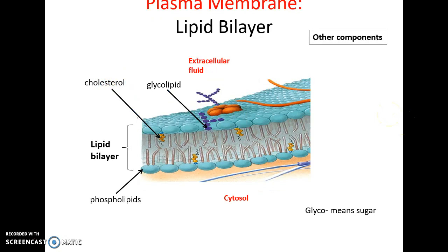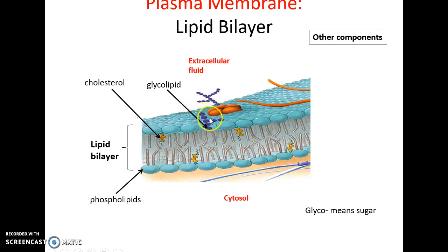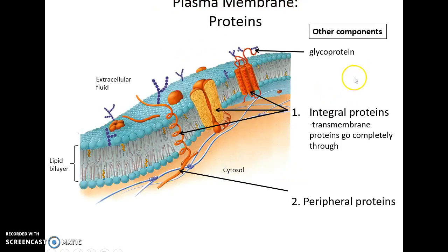Other structures found in the plasma membrane include cholesterol, embedded within the fatty acid chains. You also find glycolipids — lipids that have fatty acid chains and a carbohydrate group facing out toward the extracellular fluid.